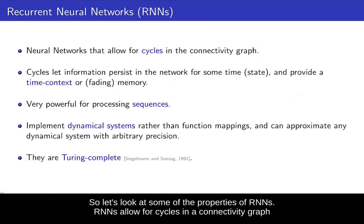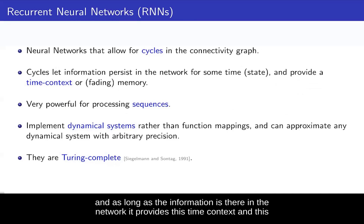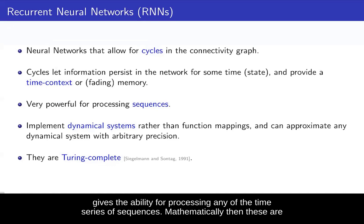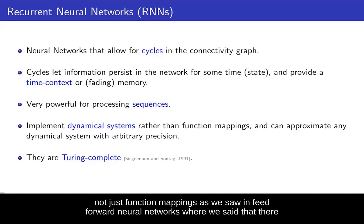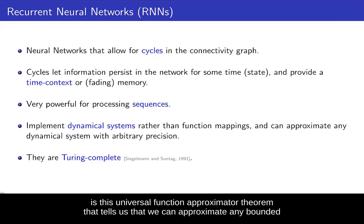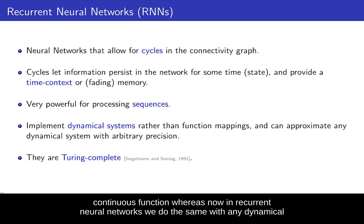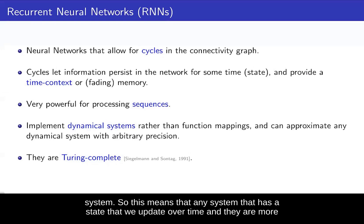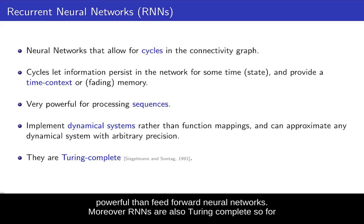RNNs allow for cycles in a connectivity graph and as long as the information is there in the network, it provides a time context. This gives the ability for processing any time series or sequences. Mathematically, these are not just function mappings as in feedforward neural networks, where the universal function approximator theorem tells us we can approximate any bounded continuous function. In recurrent neural networks, we do the same with any dynamical system — any system that has a state we update over time — and they are more powerful than feedforward neural networks.